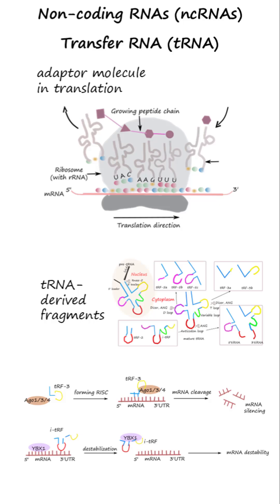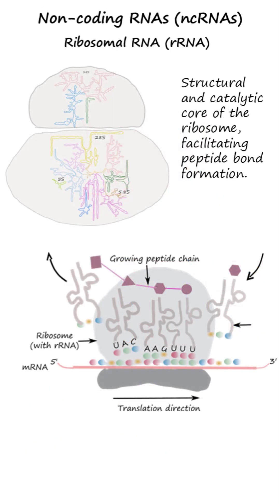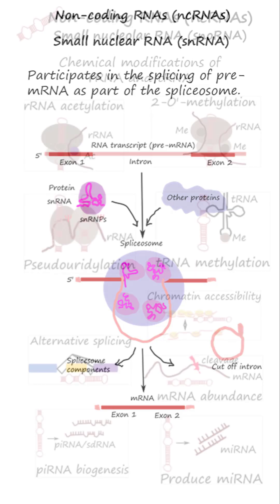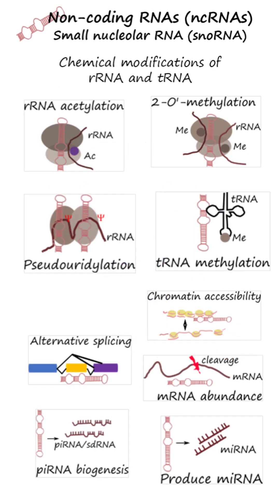Examples of non-coding RNAs and their functions: Transfer RNA delivers specific amino acids to the ribosome during protein synthesis. Ribosomal RNA forms the structural and catalytic core of the ribosome, facilitating peptide bond formation. Small nuclear RNA participates in the splicing of pre-mRNA as part of the spliceosome. Small nucleolar RNA guides chemical modification of rRNA and sometimes tRNA.